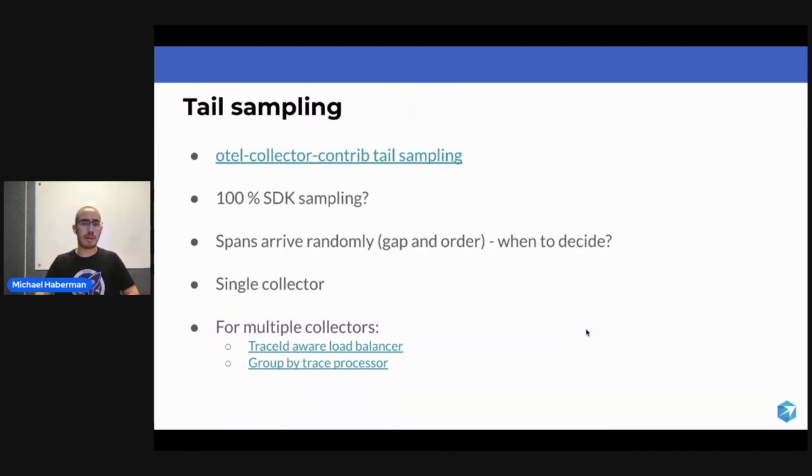Imagine that you're the collector and you're starting to get spans. You're starting to get spans in a random way - there isn't any order to them and there isn't any certain defined gap between the spans.